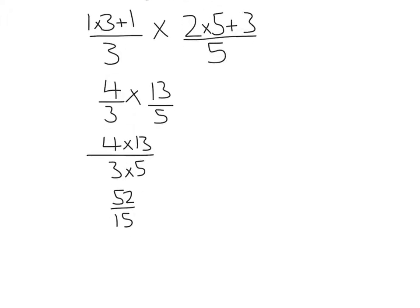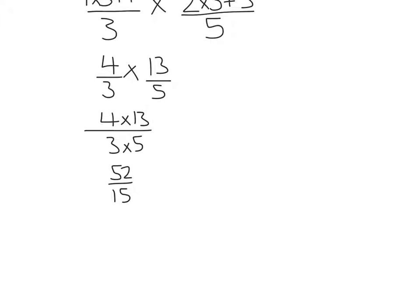Now I need to put this back into a mixed number. I have 52 over 15. How many 15s go into 52? Well, 3 times 15 is 45, so it's 3 wholes. To get from 45 to 52 is 7, so the answer is 3 and 7/15.